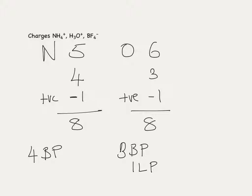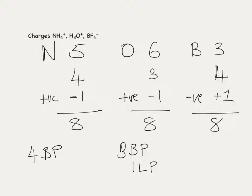BF4-: boron has three electrons in its outer shell, four bonds to fluorine, and a negative charge means we add one to our electron count, giving a total of eight electrons. So all three of these examples have four pairs of electrons. NH4+ and BF4- are both tetrahedral, while H3O+ is trigonal pyramidal, but also based on a tetrahedron like we saw in the last examples.